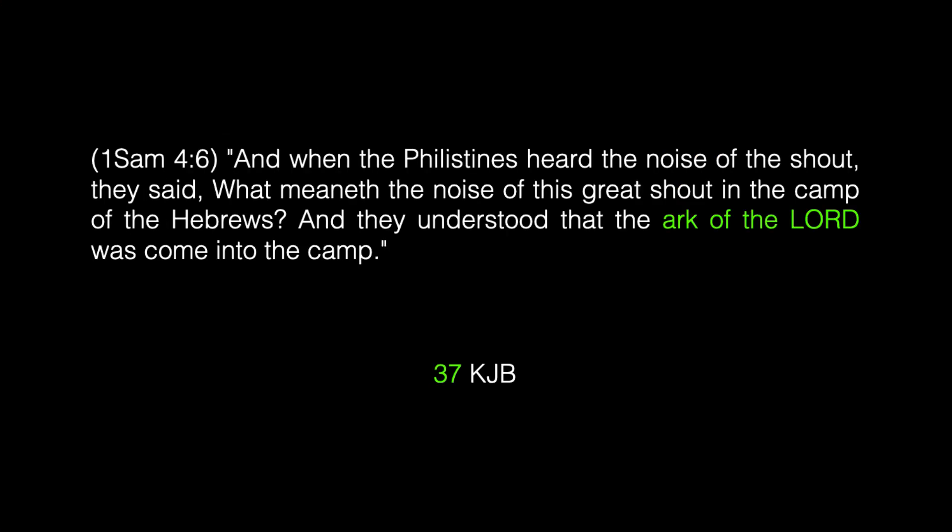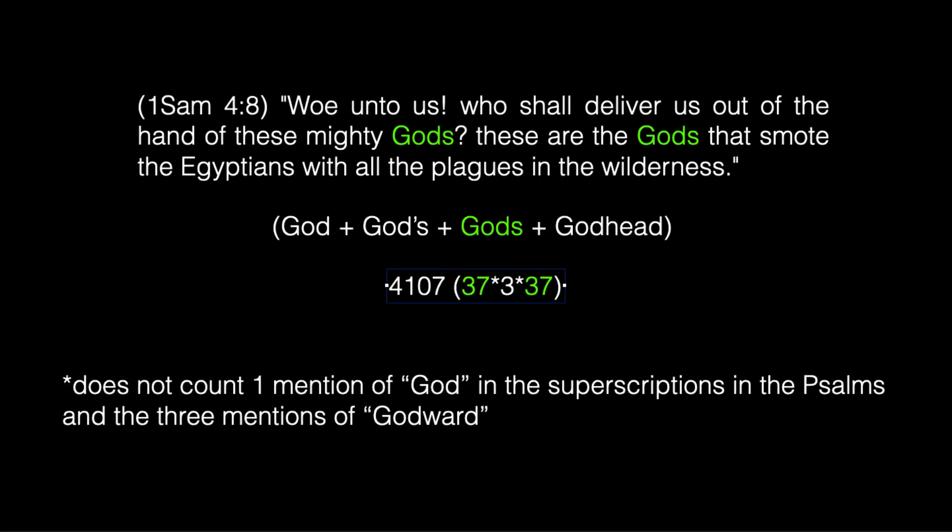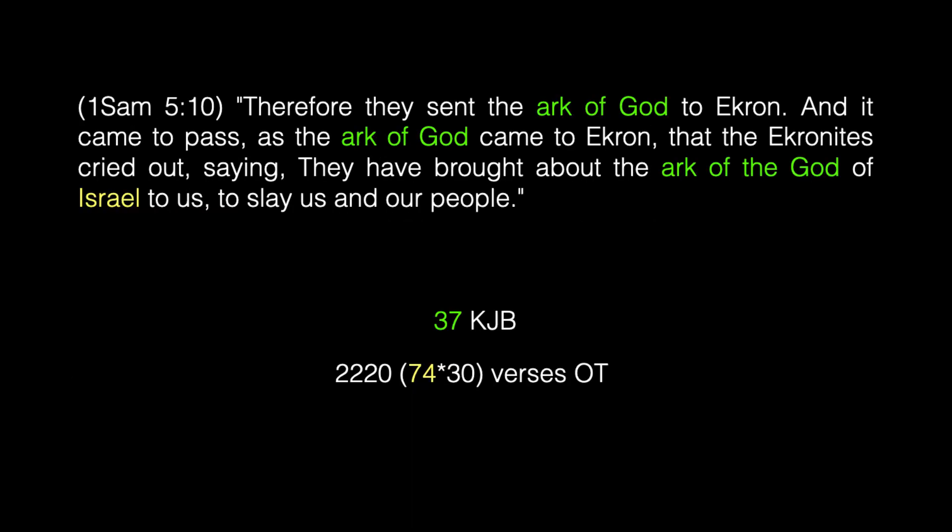Verse 6: 'And when the Philistines heard the noise of the shout, they said, What meaneth the noise of this great shout in the camp of the Hebrews? And they understood that the Ark of the Lord was coming to the camp.' The phrase 'Ark of the Lord' occurs exactly 37 times in the King James Bible. And the word 'God,' 'God's' possessive, 'Gods' plural, and 'Godhead' combined appear 4,107 times in the Old and New Testament — not counting the superscriptions in the Psalms — that is 37 times 3 times 37.